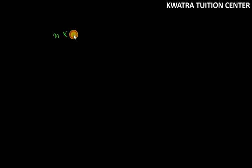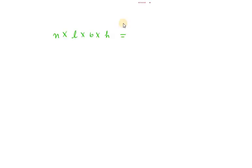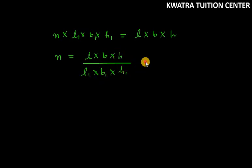This will be N times L1 times B1 times H1 equals 7/8 times L times B times H. So N equals 7/8 times L times B times H divided by L1 times B1 times H1. Now we will put values.